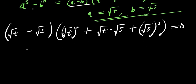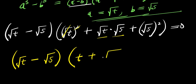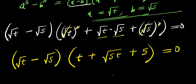Simplifying, the square roots squared cancel with the squares, giving us (√t − √5)(t + √(5t) + 5) = 0.